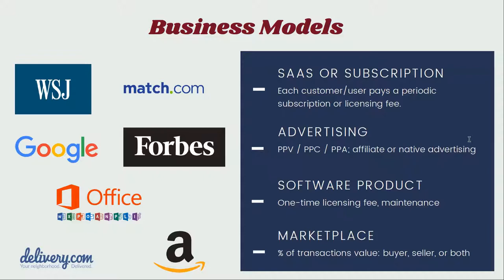The third model is a software product. This is a somewhat outdated model, but it was very common before. One example that still exists is Microsoft Office — you buy a license per computer. It usually works as a one-time license fee, and sometimes there's a maintenance component. If there is periodic maintenance, that resembles a subscription model, so sometimes the software product model has a subscription component as well.